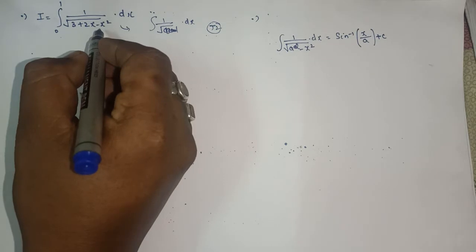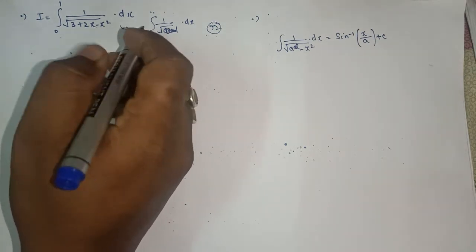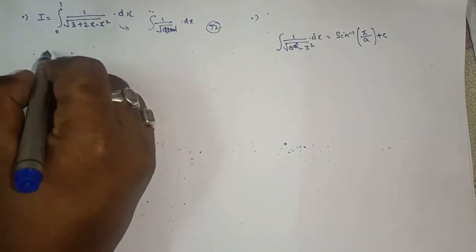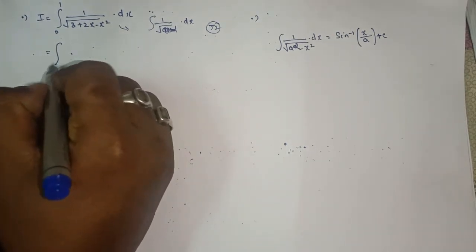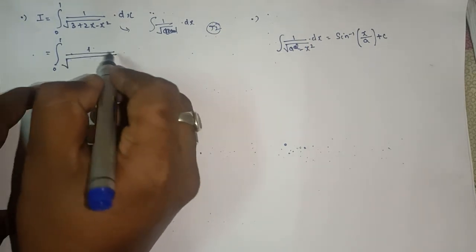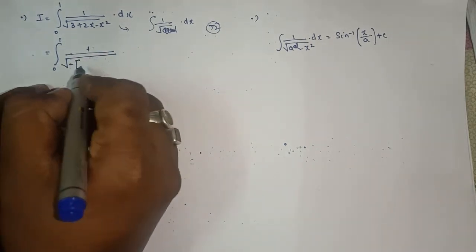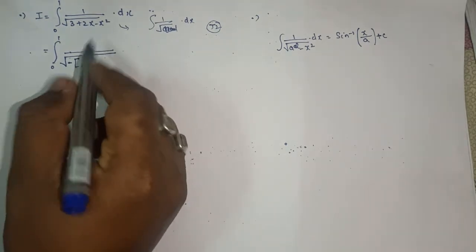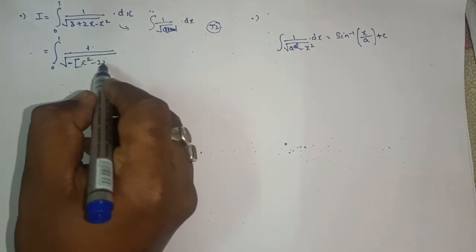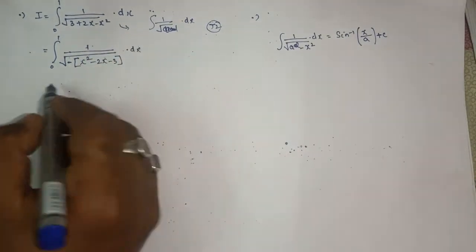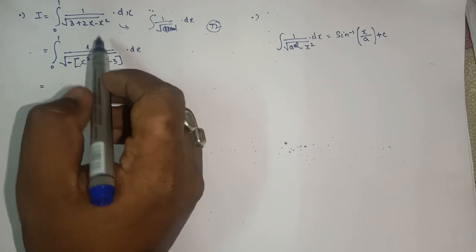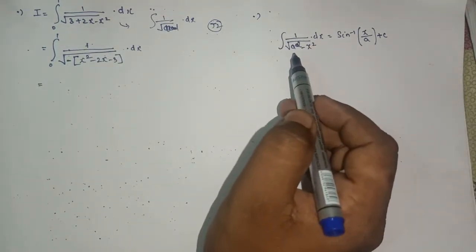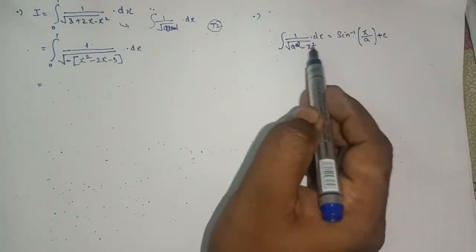Clearly we can see that the sign for the x² term is negative. So first we have to make the sign positive and the coefficient of x² should be one. We'll write a minus inside the root only — don't bring this minus outside. So this will be: minus(x² − 2x − 3) inside the root into dx. Remember, whenever in the question the sign for x² is negative, you always have to apply the third formula: ∫1/√(a² − x²) dx.